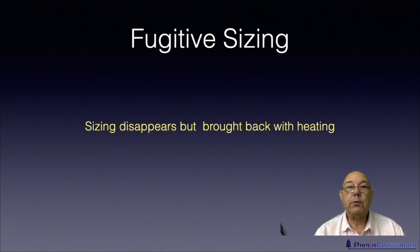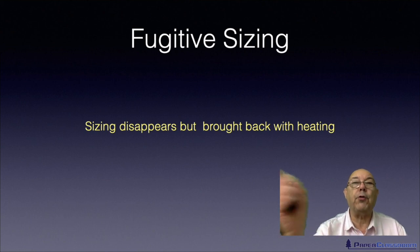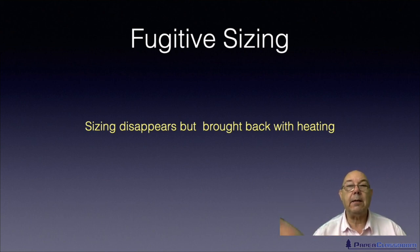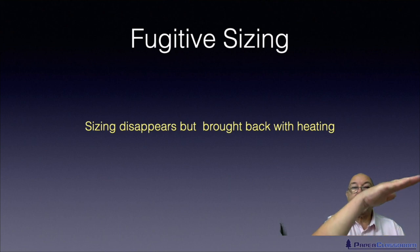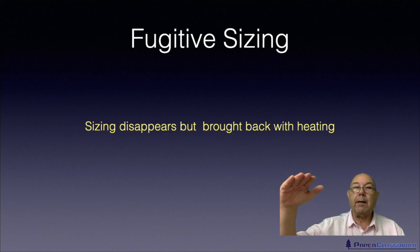So the sizing is hidden. But if you ran that piece of paper just through the drying section and heated it up in some way, the sizing magically comes back again. Fugitive sizing is where the sheet has been sized, the sizing goes away, and then heating brings it back.